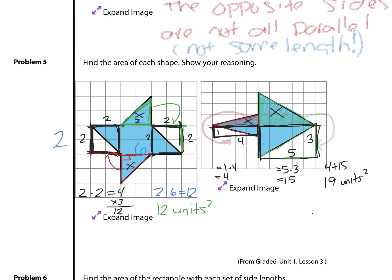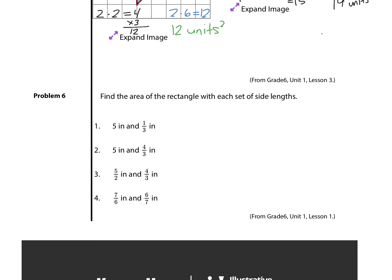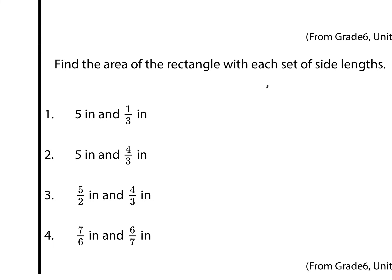So for those shapes, it was about breaking those down into different squares or rectangles from the triangles we were given. And our last question today, question six. Find the area of the rectangle with each set of side lengths.